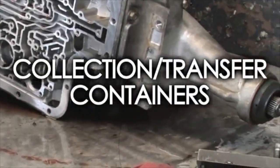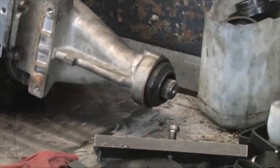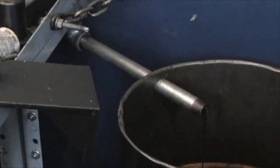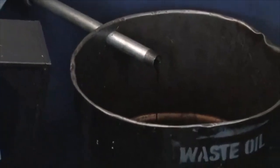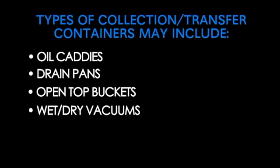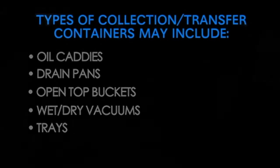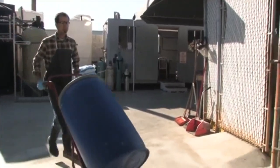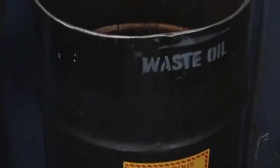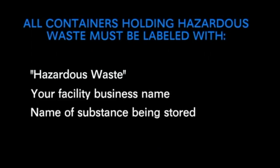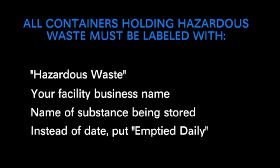Collection and Transfer Containers: containers used to collect and transfer hazardous waste to a labeled and closed hazardous waste storage container have different requirements. These types of containers may include oil caddies, drain pans, open-top buckets, wet-dry vacuums, or trays. You may leave these containers uncovered during operation. However, all collection and transfer containers must be emptied by the end of the day. All of these types of hazardous waste containers must be labeled with the words 'hazardous waste,' your facility business name, the name of the substance being stored. Instead of the date, write the words 'empty daily.'